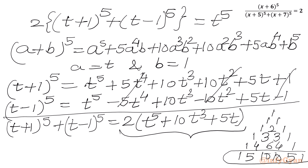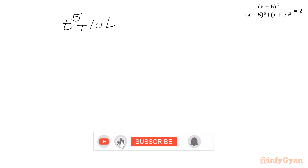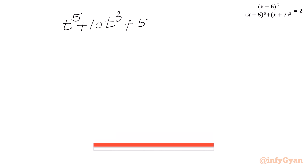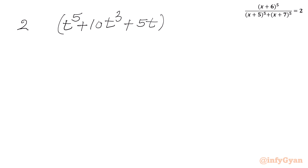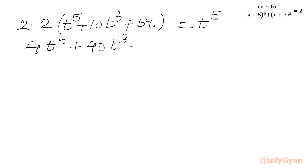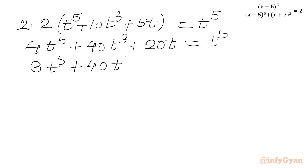We apply this result to our equation. The left-hand side becomes 2 × 2 × (t^5 + 10t^3 + 5t), giving 4t^5 + 40t^3 + 20t, and the right-hand side is t^5. Taking all terms to the left-hand side, we get 3t^5 + 40t^3 + 20t = 0.